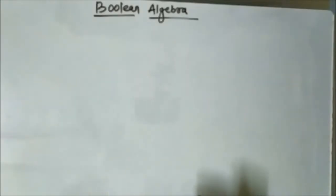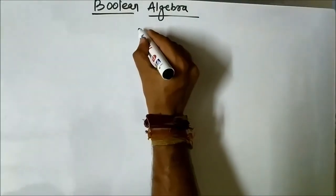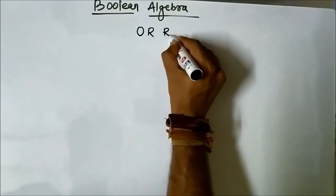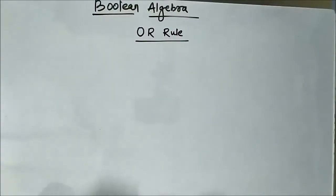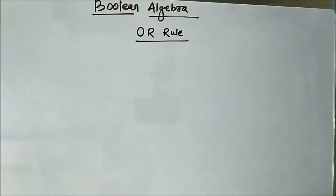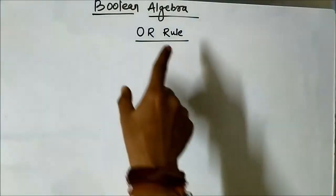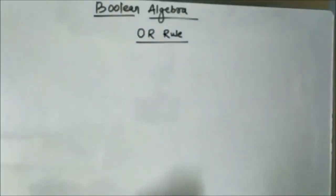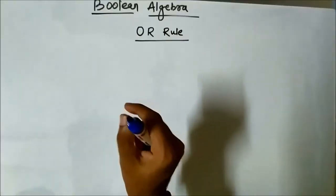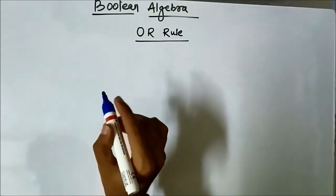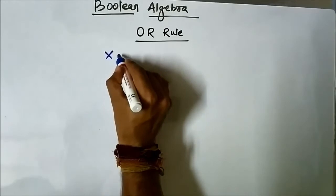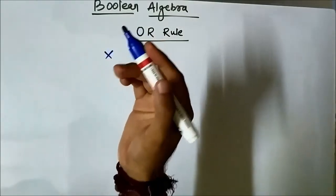Now we will discuss some of the basic rules associated with Boolean algebra. The first set of rules is called the OR rule. OR means, in binary or the digital logic system, sum or addition. The logic circuit which implements the OR operation is the OR gate. These rules are associated with the OR operation. Let X be a digital logic or Boolean variable.